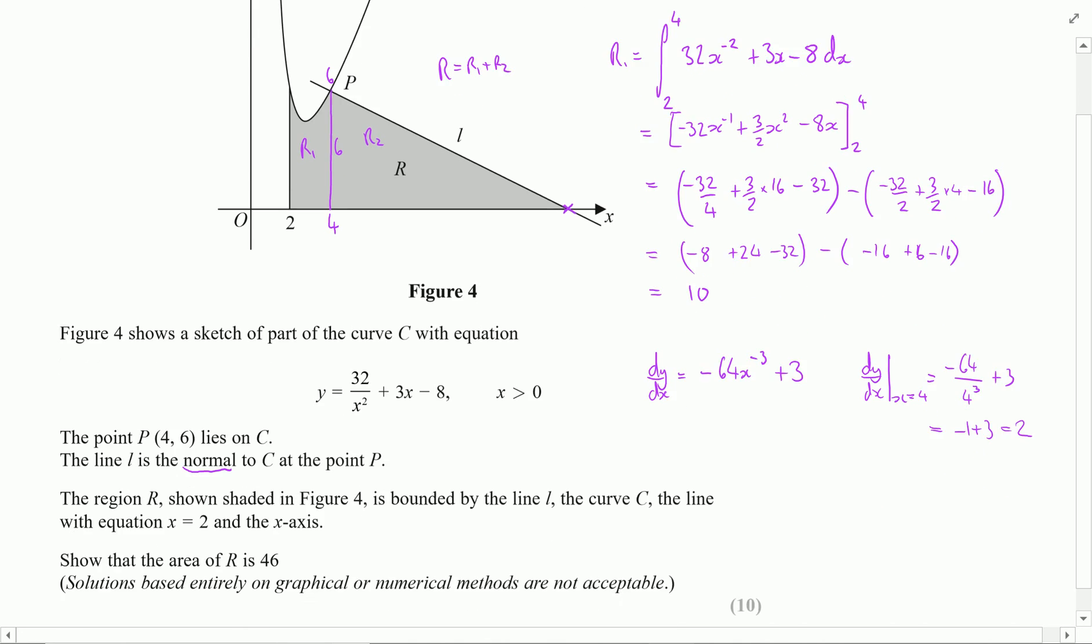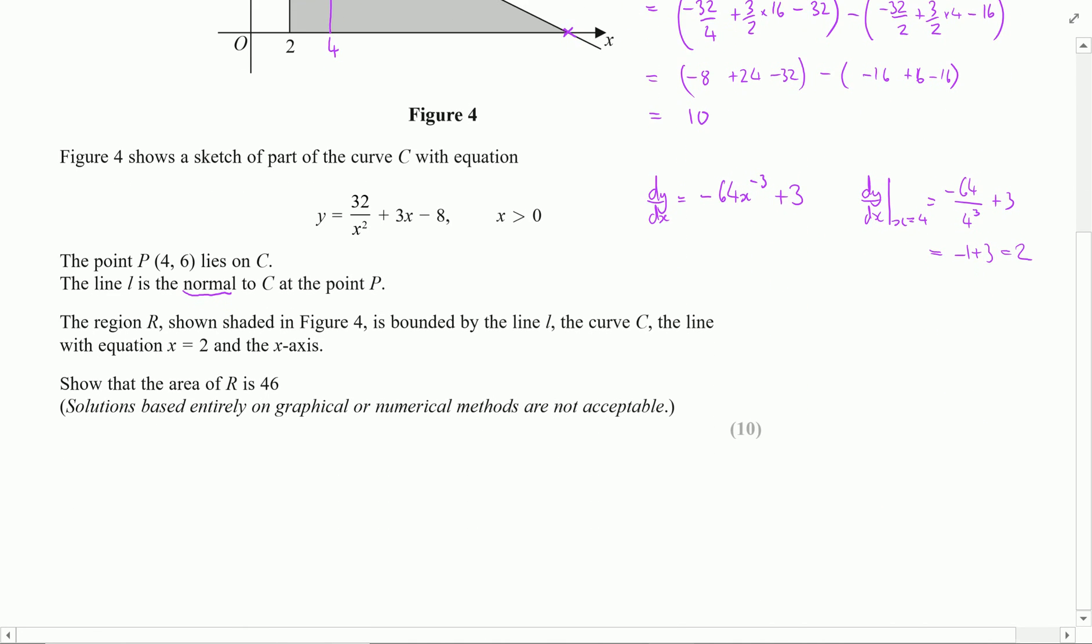Now that's the gradient of the tangent. I now need to find the gradient for the normal. The gradient of the tangent times the gradient of the normal equals minus 1. I know the gradient of the tangent is 2, so 2 lots of the gradient of the normal equals minus 1, or the gradient of the normal is minus 1 half.